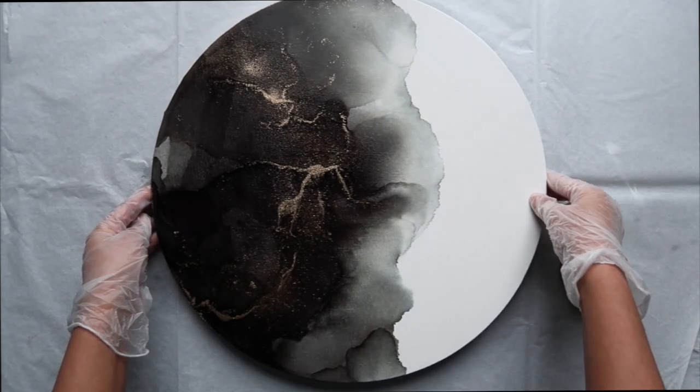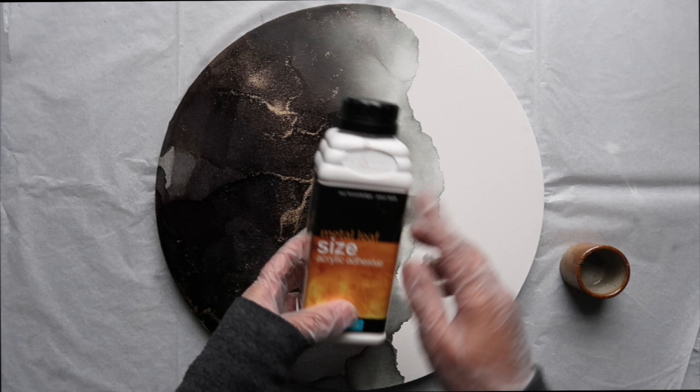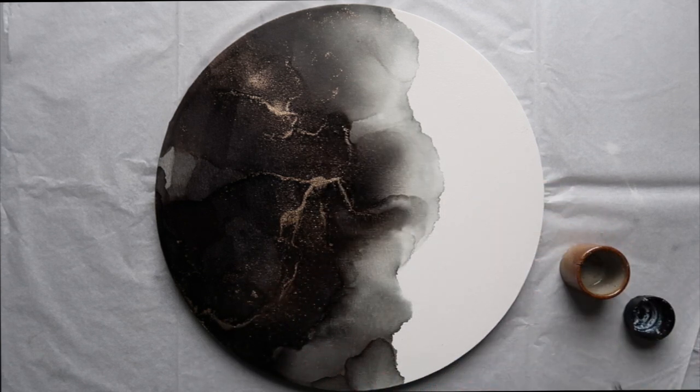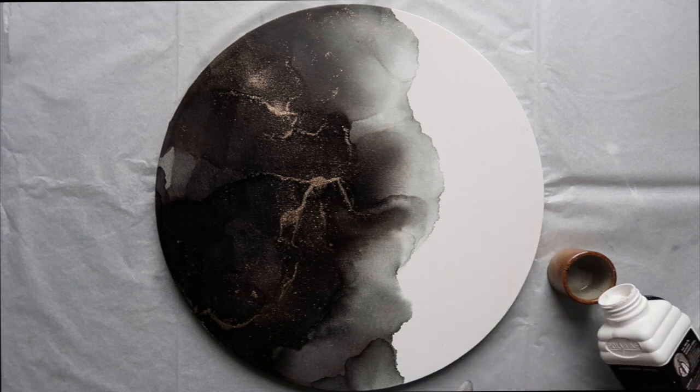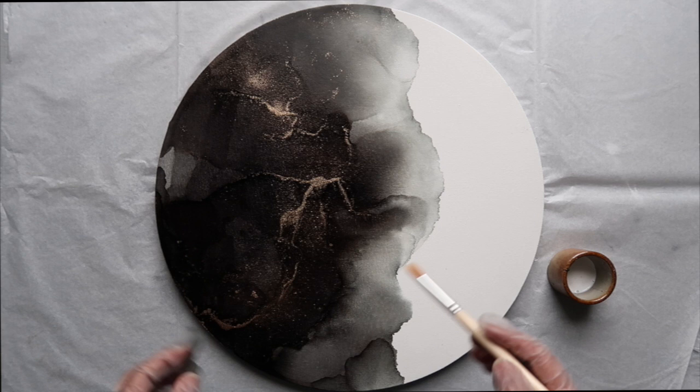So once that's done and I'm happy with how it looks, I can move on to the next part of the process which is the gold leaf. You don't really have to do the gold leaf if you don't want to. You can just leave your painting like this and it would be absolutely fine. But I feel like mine needs a bit more gold.